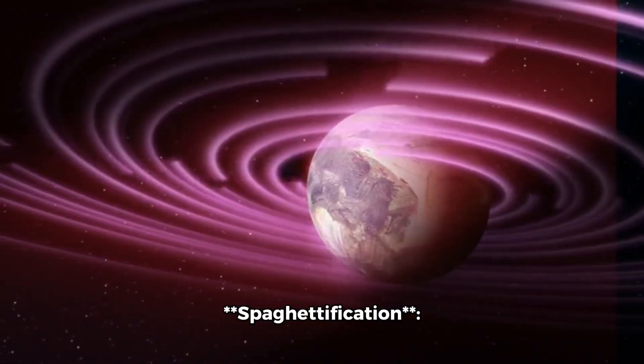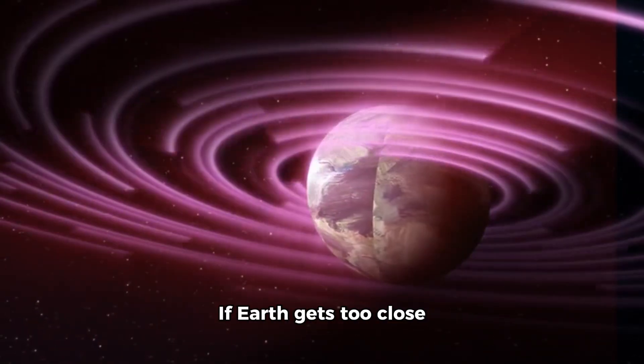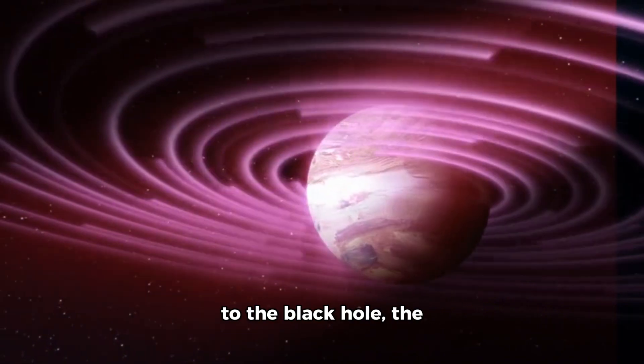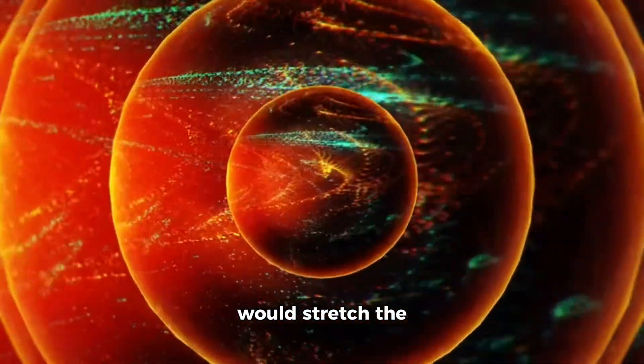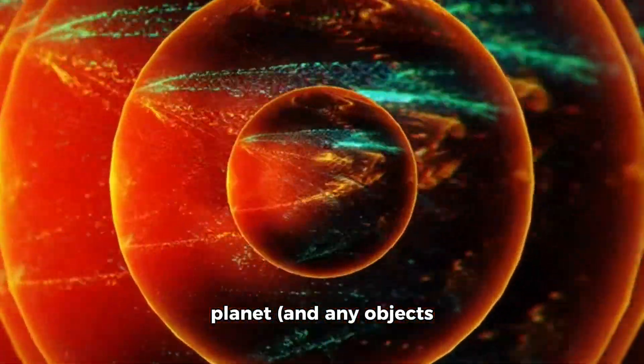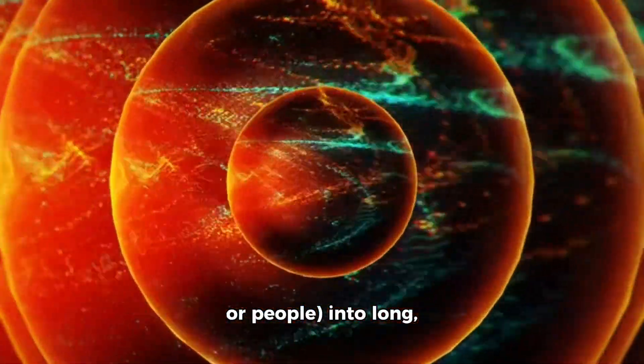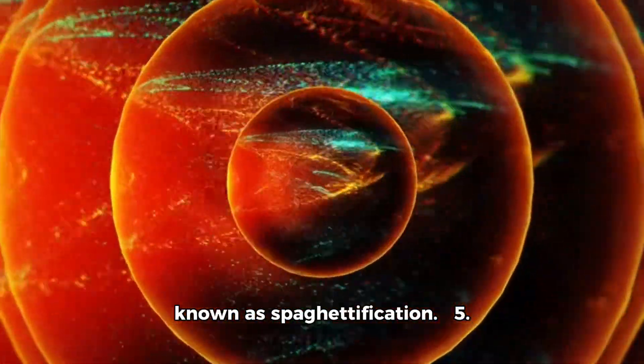Spaghettification: tidal stretching. If Earth gets too close to the black hole, the differential gravitational forces would stretch the planet and any objects or people into long, thin shapes, a process known as spaghettification.